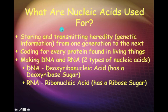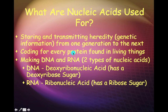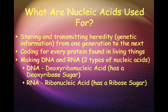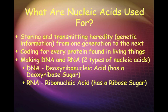Nucleic acids are used for storing and transmitting genetic information — sometimes called heredity — from one generation to the next. DNA determines things like your eye color and hair color. The way it works is that the code in DNA is essentially the instructions for building proteins, another one of the macromolecules. The type of protein built determines what you look like, so the DNA code determines the protein made, which determines your appearance.